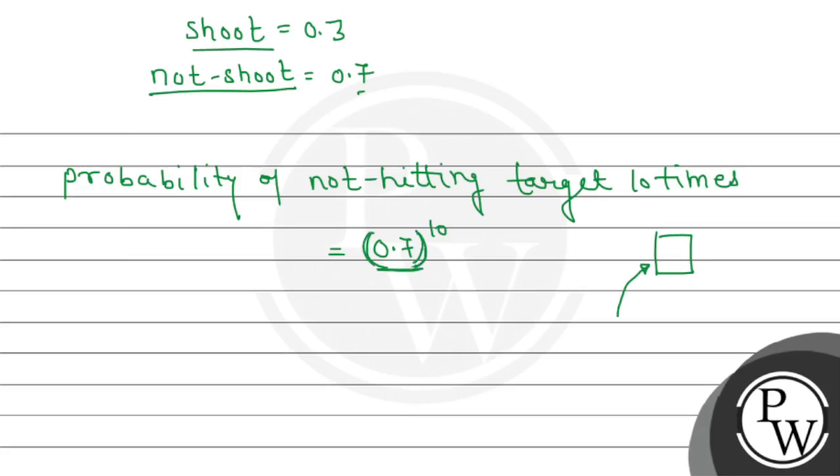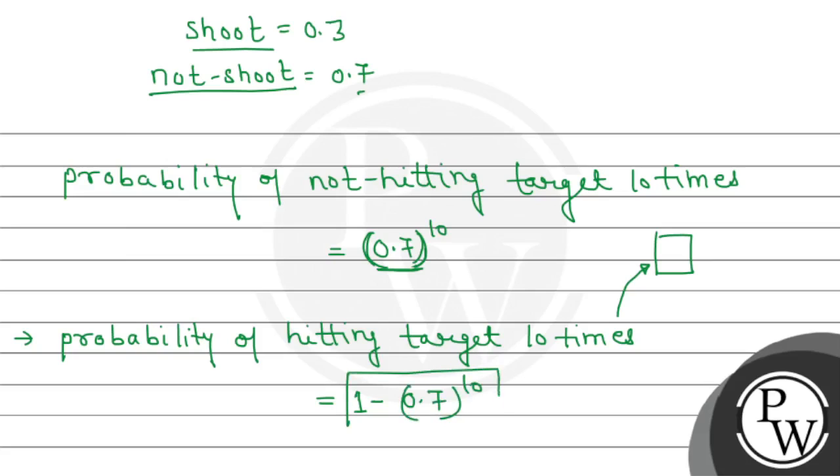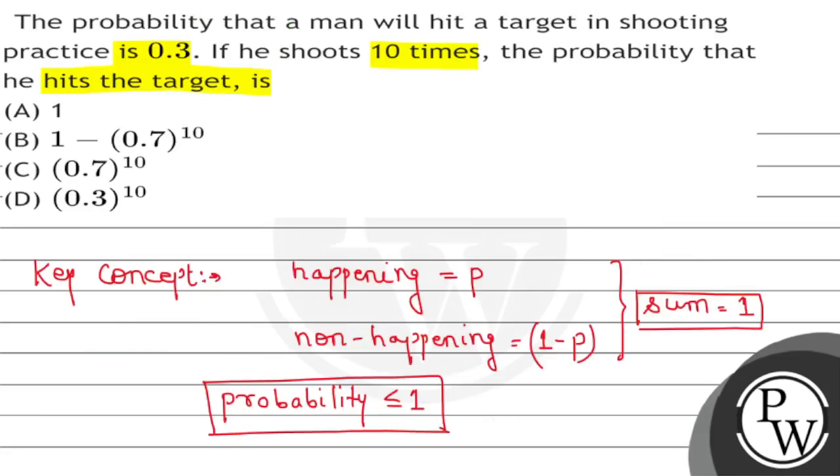So it will be 0.7 power 10. The probability of hitting the target - this will be 0.7 power 10.